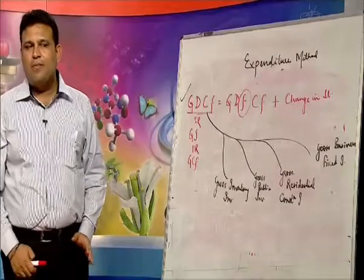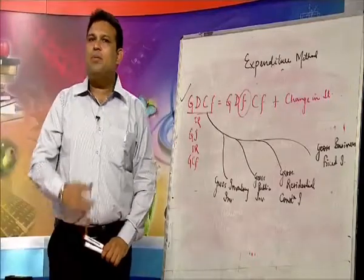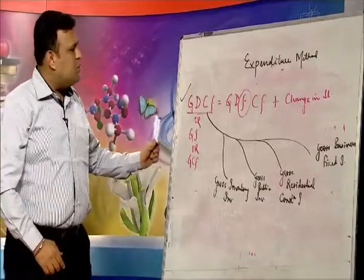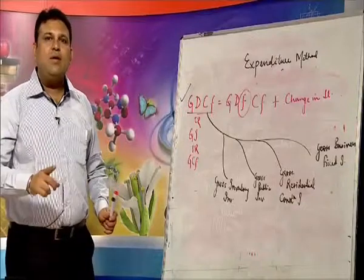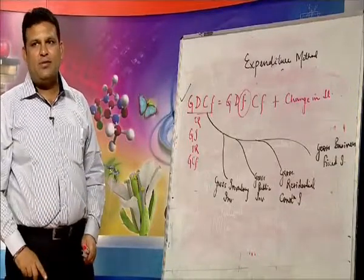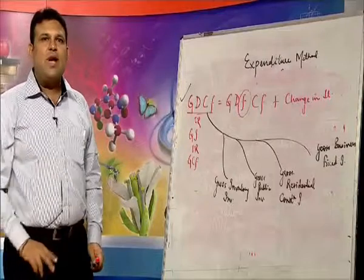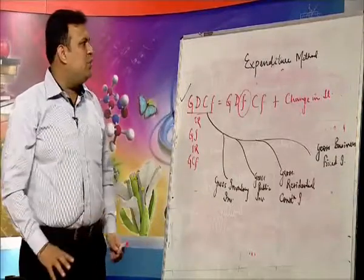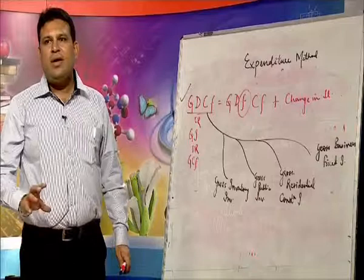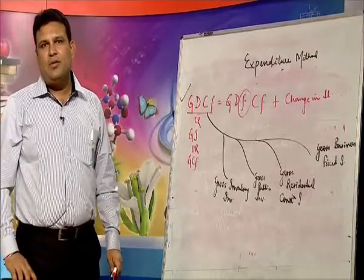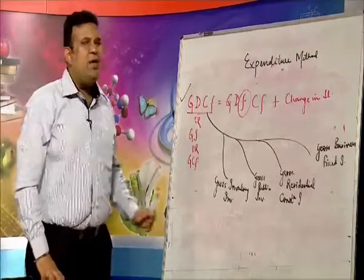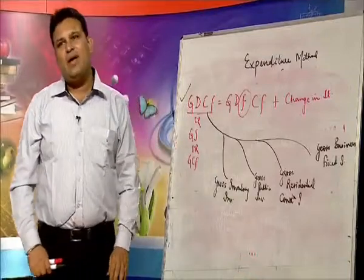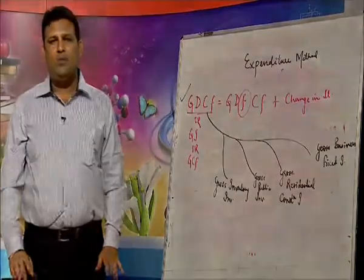NDP at FC is your domestic income. When you add NFIA, it becomes your national income — NNP at FC. This is the third method of estimating national income. For numerical purposes, there are questions based on income and expenditure methods simultaneously — we will discuss those in a new session. You must be very clear about both the income and expenditure methods.